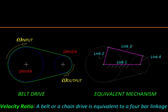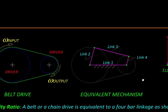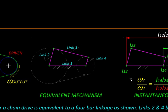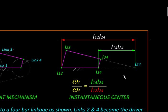Let us now talk about the velocity ratio. It can be easily represented in terms of the two pulley radii, but since we have replaced the pulleys with this equivalent mechanism, we will talk in terms of this four-bar and the instantaneous centers involved.